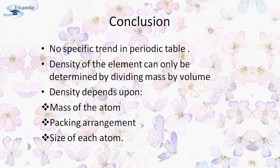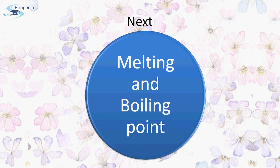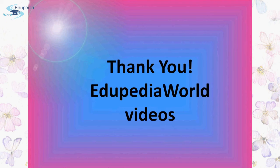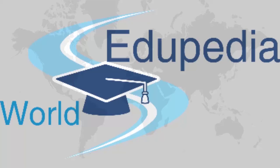You cannot determine a clear variation of density just by looking at the modern periodic table. Here I conclude all these points. In the next session we shall learn about the variation of melting and boiling points in the modern periodic table. Thank you for watching EduPedia World videos.